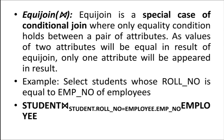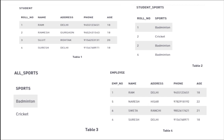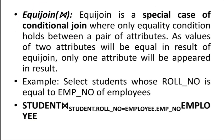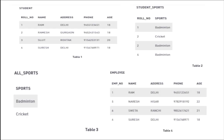To understand equi join better, here is the example: select students whose roll number is equal to the employee number of employees. I am writing the join condition — I take the student roll number from the student table and the employee number from the employee table, and I check whether the roll number is equal to the employee number.